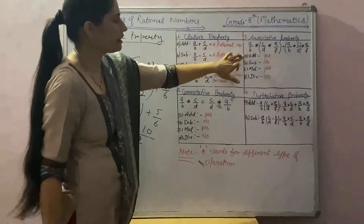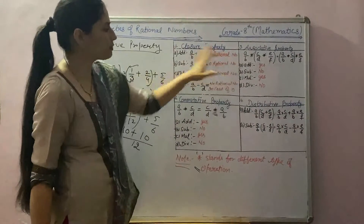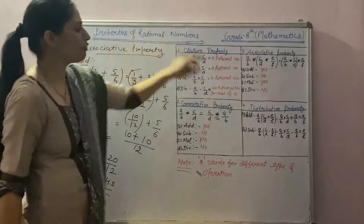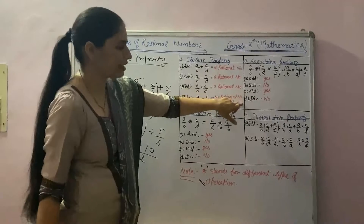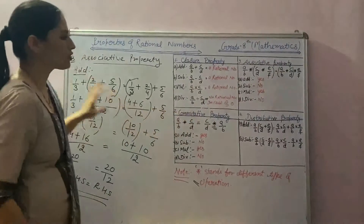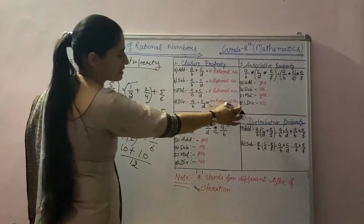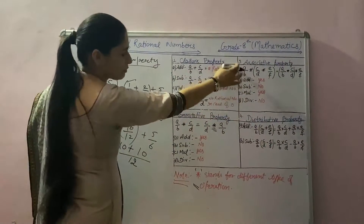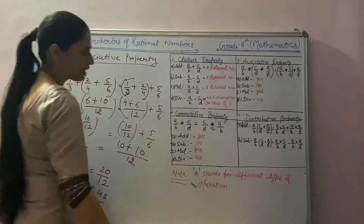In the same way, you can check this property for subtraction, multiplication and division. In the case of subtraction and division, this property does not hold.